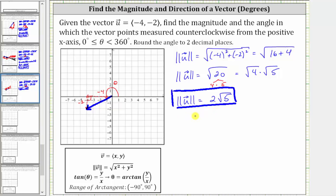Now to determine the direction angle, or angle theta. Theta equals arc tangent of y divided by x, or the ratio of the opposite side to the adjacent side, which gives us negative two divided by negative four.